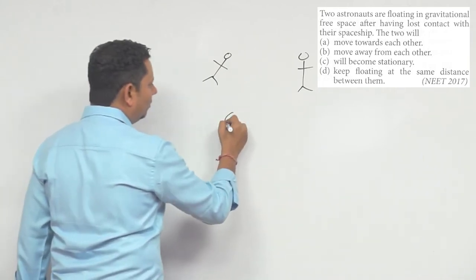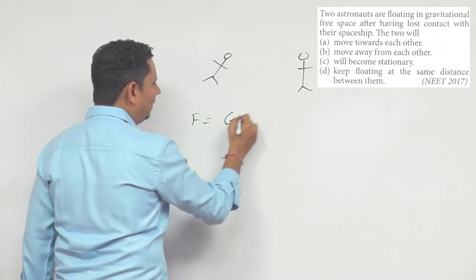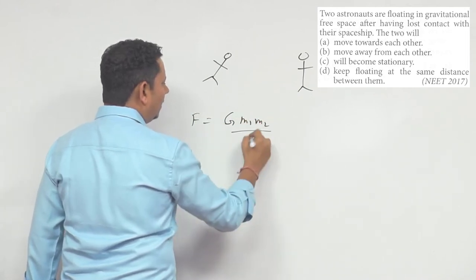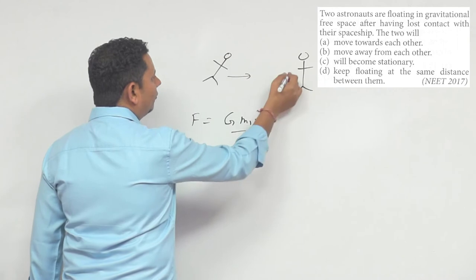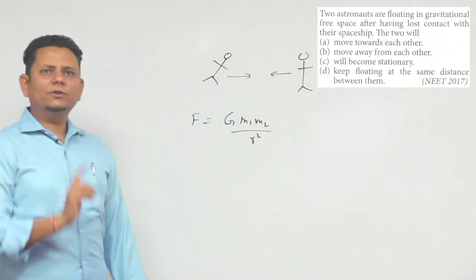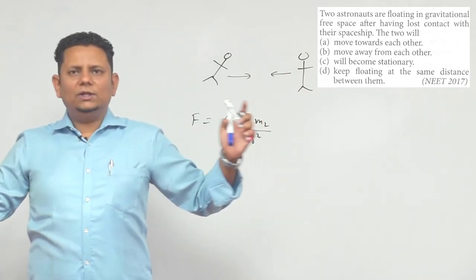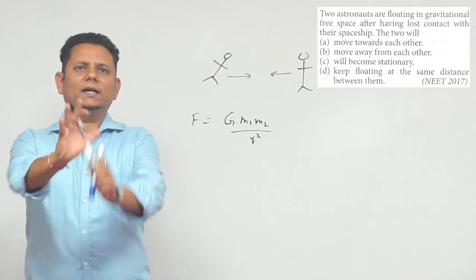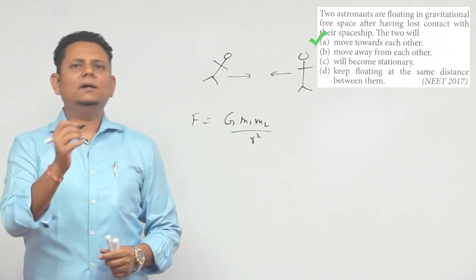call gravitational force, that is equal to G m1 m2 divided by r squared. This force will move them towards each other, and hence option number A will be the right answer.